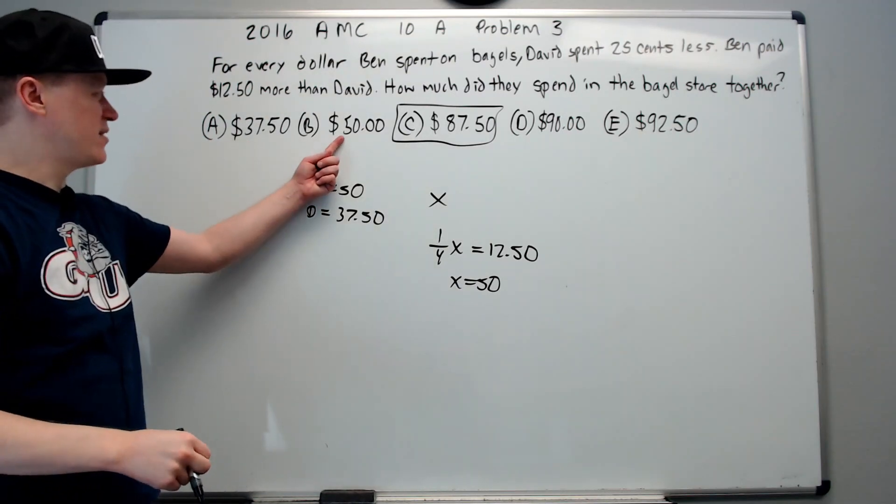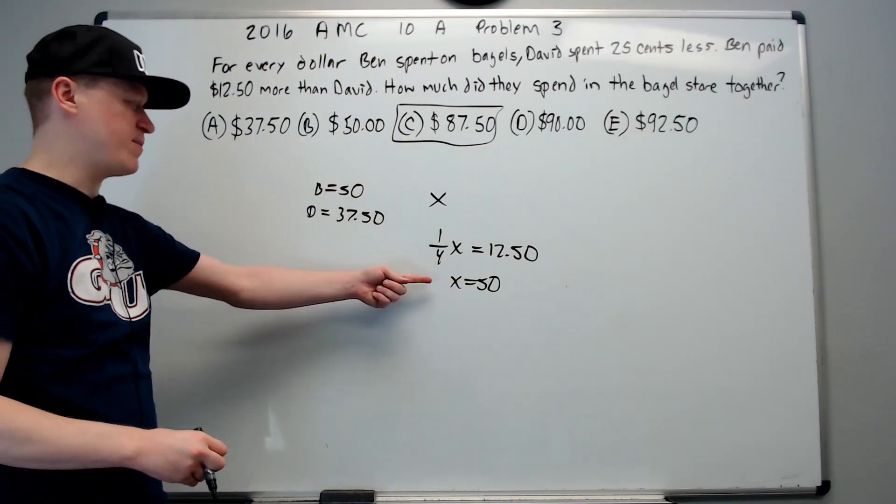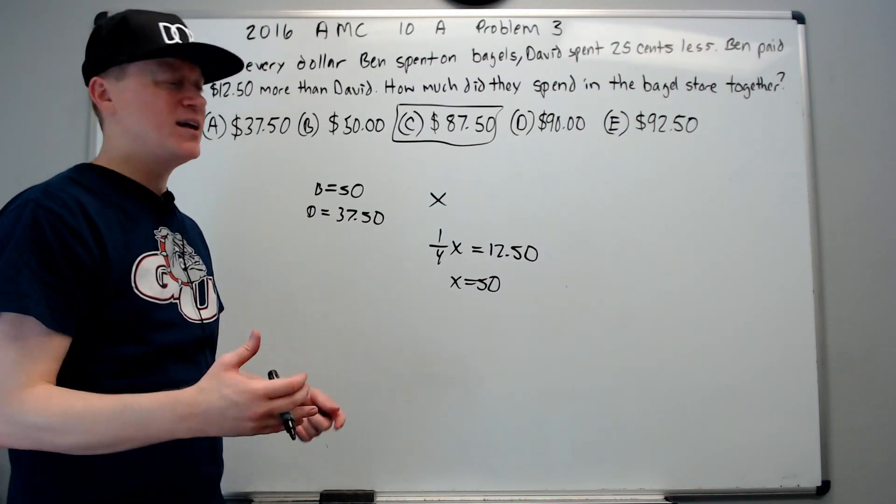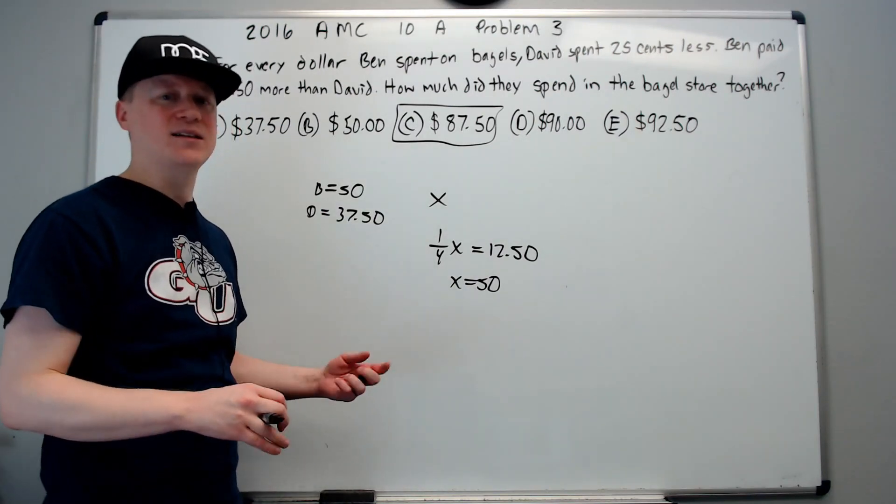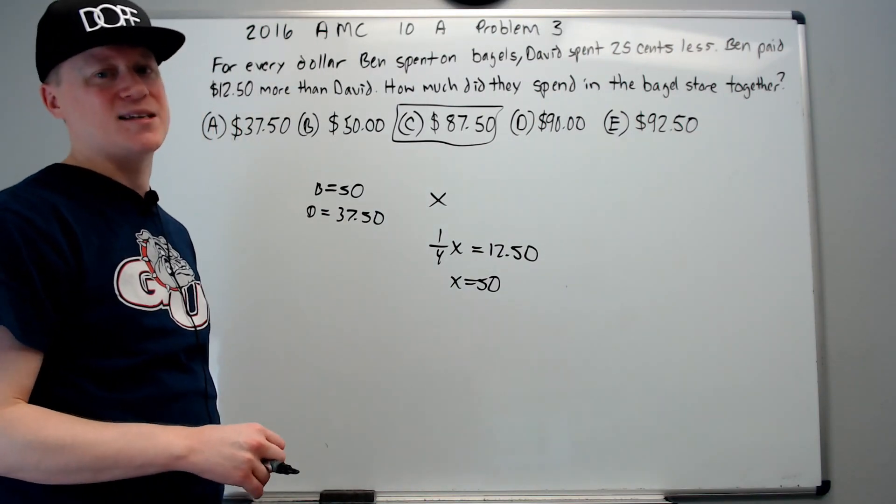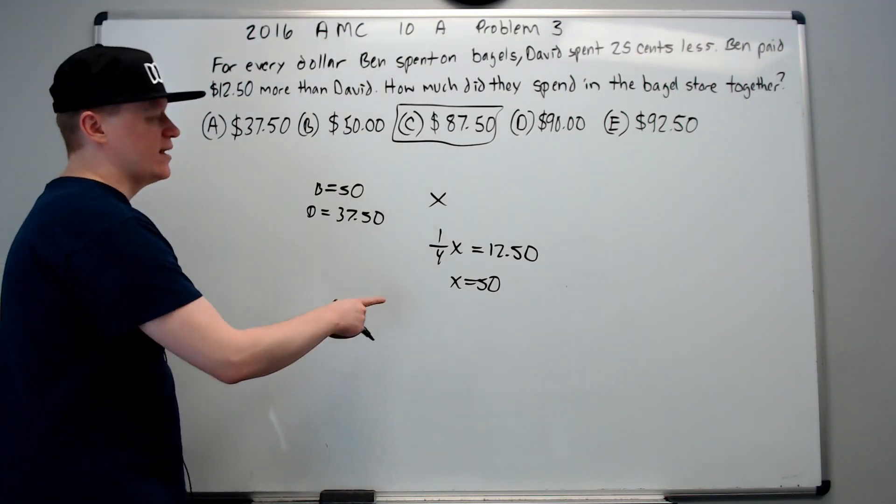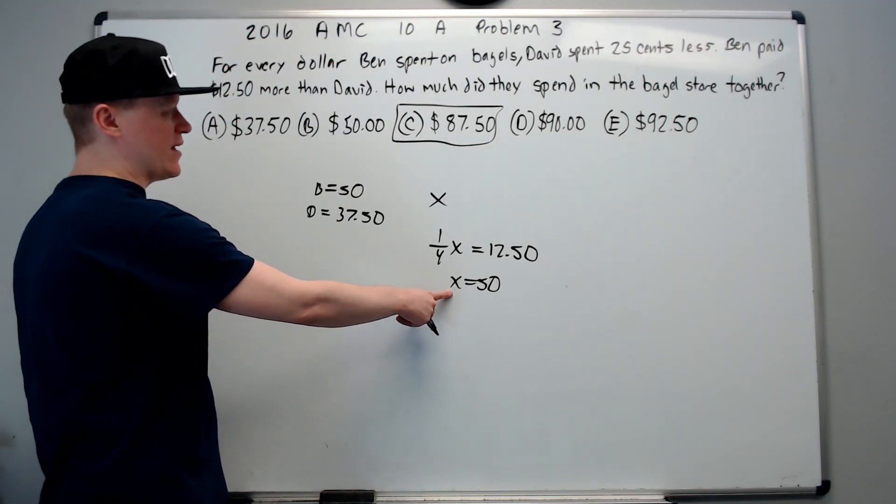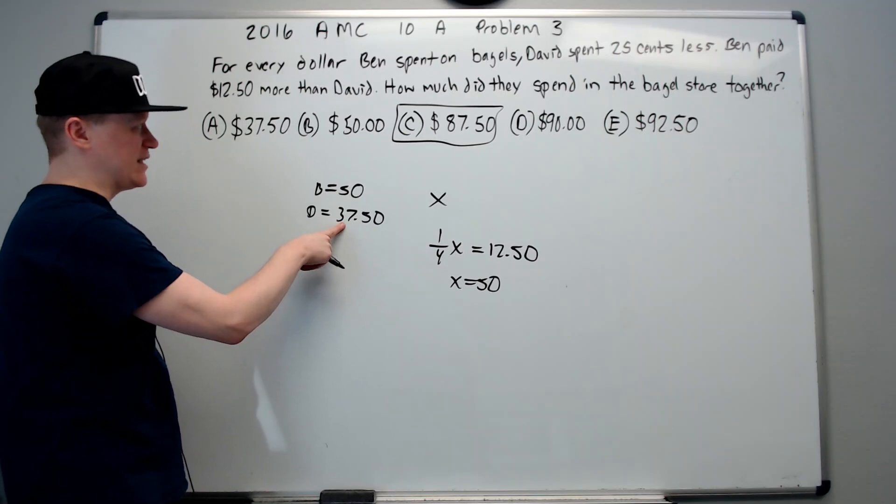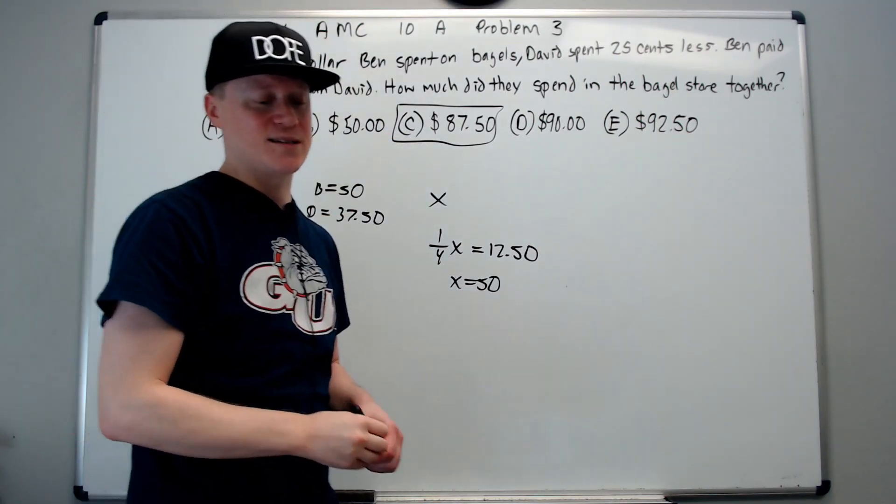Notice that's one of the trap answers. Because a lot of people solve for X and say, I got X. X isn't the answer. We're not looking for X. Be careful with that in this test. They do it a lot. So X is 50. And then you do the same thing. Subtract 12.50 to get David and end up with the same conclusion.